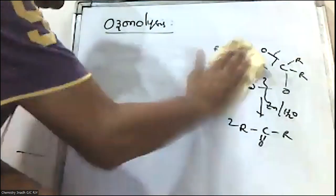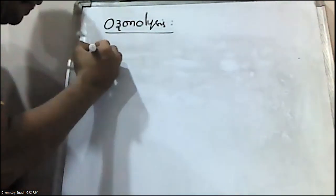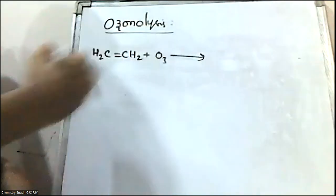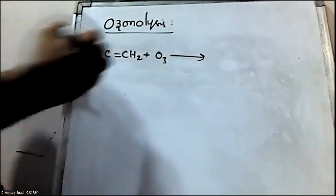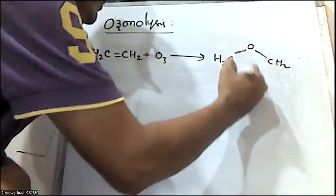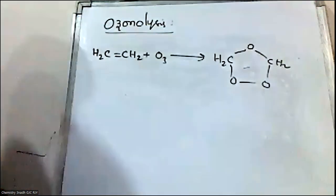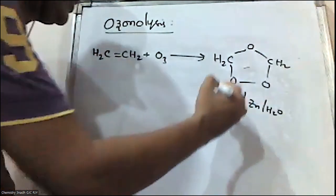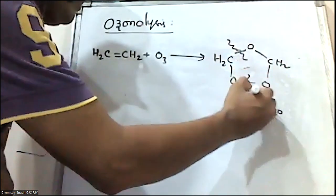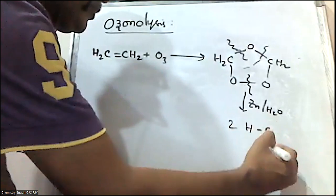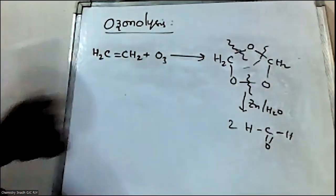Let me take one example. If you take ethene, which on reaction with ozone initially it forms ethene ozonide. Which on hydrolysis, the bond is breaking. Since this is a carbon-carbon double bond, you will get two moles of formaldehyde.